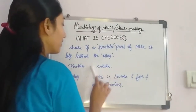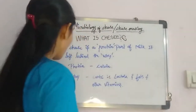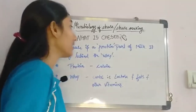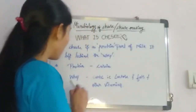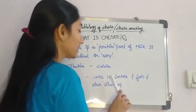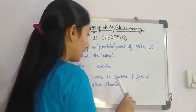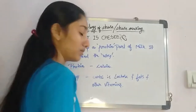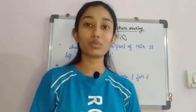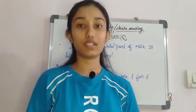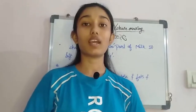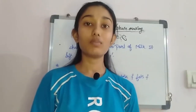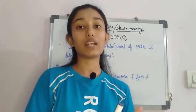The protein in curd is casein protein. The whey changes — that is the other protein — and all other components such as lactose, fats, and vitamins are in the whey. So protein is on one side and all the other things are on the other side. When the pH decreases, that is when acid formation occurs, the protein separates from the other components.